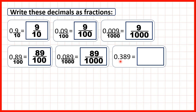Finally we have 0.389. There are three digits after the decimal point, so we draw a line across from the decimal point and write a denominator of 1000, because the third digit after the decimal point is the thousandths digit. So that gives us 389 thousandths.